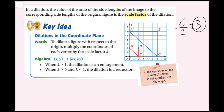So (0, 2) multiplied by three gives (0, 6). Then b is (2, 2); multiplied by three gives (6, 6). And (2, 0) multiplied by three gives (6, 0).